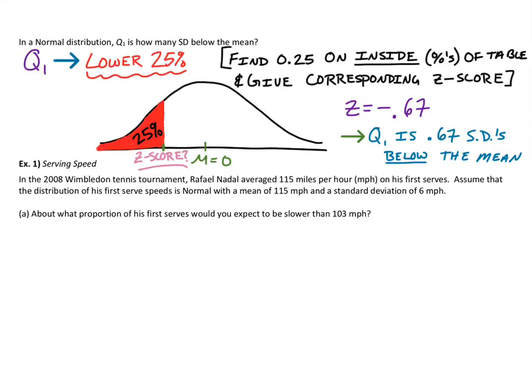So far we've talked about z-scores and percentiles and how to find the area underneath the normal curve. You're still going to need that normal z-score percentile chart for this video. And instead of just looking at the standard normal distribution where the mean is zero and the standard deviation is one, we're going to actually apply this to some real-life problems.